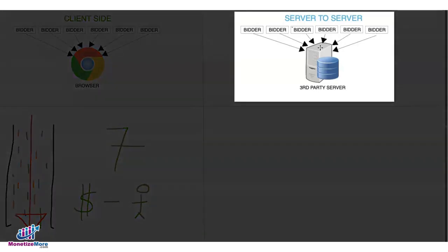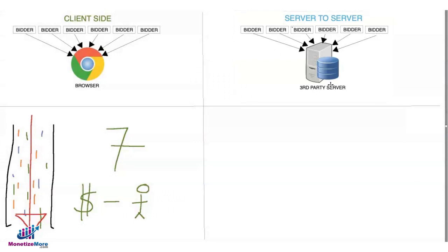Server-to-server, on the other hand, the auction happens in a third-party server instead of the user's browser. And calls are made in real time to all these different bidders. Since this has a lot of different ports and is not constrained by a small number of ports, unlike in a user's browser, more ad calls at once can be accommodated.